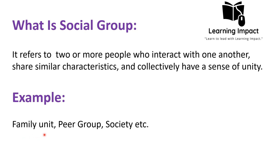An example of a social group is the family unit, which consists of two or more people — a couple and children. There is interaction that exists in the family unit, mostly casual and informal. The similar characteristic is that they are all blood relatives, and they collectively have a sense of unity because they all belong to the same group and can give emotional support to each other as members of the same family.